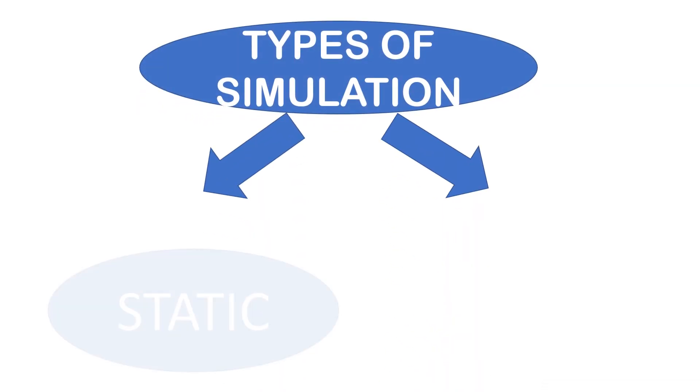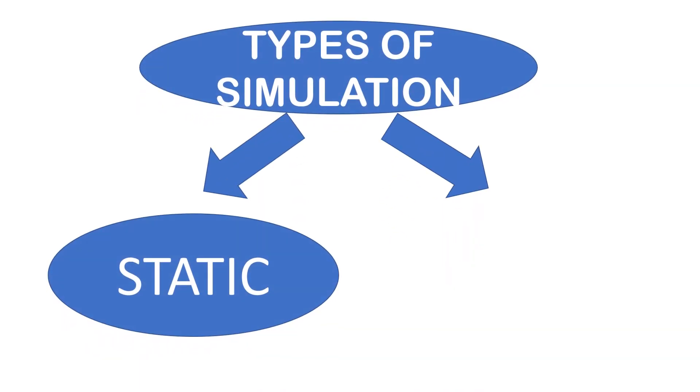Now, we move on to types of simulation. There are two types of simulation. They are static simulation and dynamic simulation. Let us learn what is static simulation and dynamic simulation.